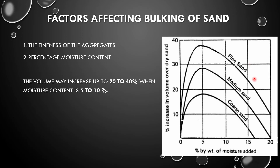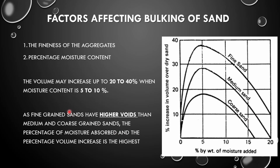As seen in the picture, we have observed bulking of sand in three different types: fine sand, medium sand, and coarse sand. The bulkage of fine sand is higher than medium sand and coarse sand. This is because finer grain sand has higher voids than medium and coarse sand, hence the percentage volume increase is highest in fine sand.